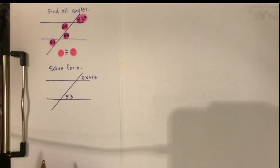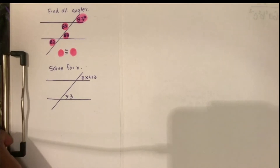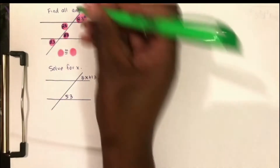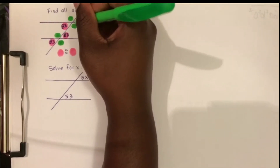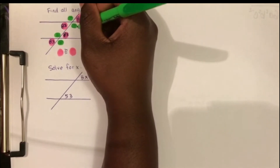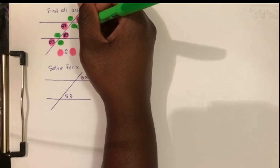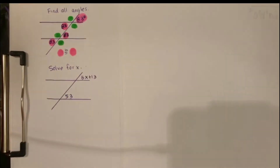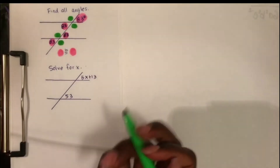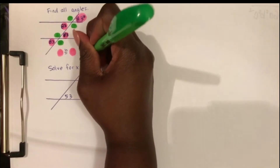Now I'm going to find the remaining angles, and I'm going to use green for those. Notice these have the same type of pattern going on — we've got a set of vertical angles, and then we copied the same pattern on the second intersection. All of those angles are congruent to each other.